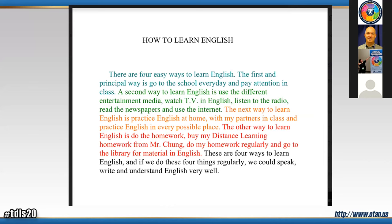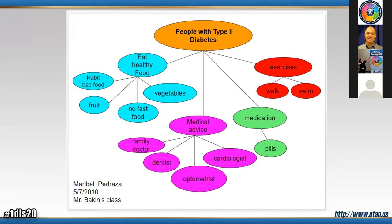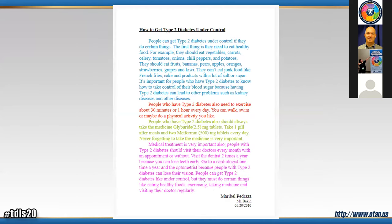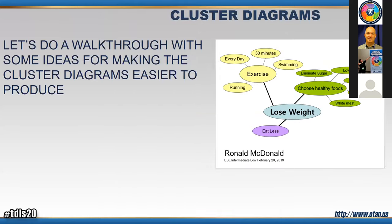Here's another example — 'How to Learn English' — with four major topic areas. The students came up with color-coding the sentences on their own. Another student, possibly a nurse or nurse's assistant, brought in her own personal knowledge for her cluster topic, making it very personal and meaningful to her. Now let's do a walkthrough with some tips for making it easier.